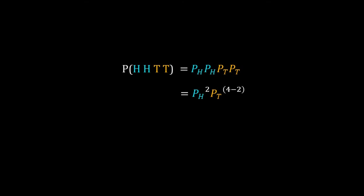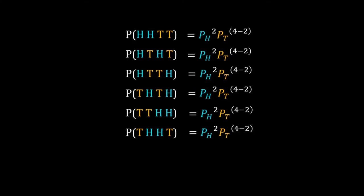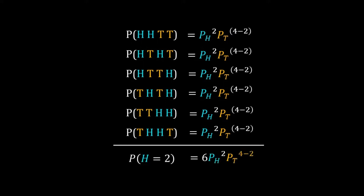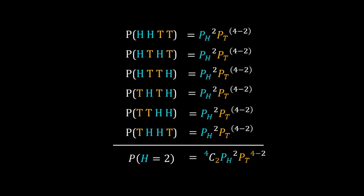Other combinations have the same probability. Since these combinations are mutually exclusive, the total probability of having two heads in four coin tosses is the sum of all these probabilities — that is, four-choose-two times p_h squared times p_t to the power of (4 minus 2).